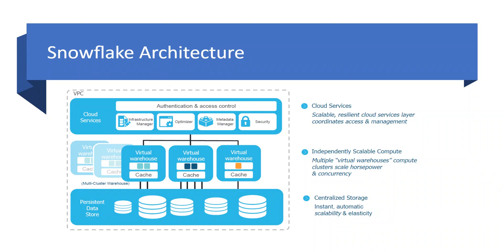The Snowflake architecture is comprised of three main layers. The first is the Cloud Service Layer, also known as the brain layer. The second is the Virtual Warehouse Layer, or compute layer. The third is the Data Storage Layer where all data gets stored. We haven't created a Snowflake account yet, so I won't be showing it live right now, but in the next videos I'll take you into the Snowflake account and show you which layer comes into the picture.